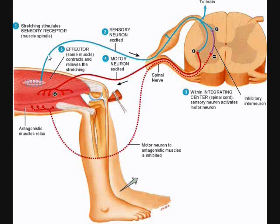It does this in the typical way. Mechanically gated ion channels will open in response to the stretch, depolarizing the membrane and creating a graded potential. If the stretch is strong enough and enough ion channels open, the graded potential will reach threshold and voltage-gated ion channels will open, resulting in an action potential, or nerve impulse, along the sensory neuron.